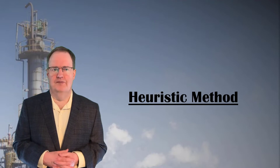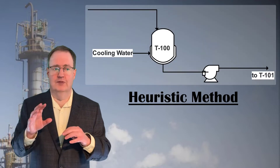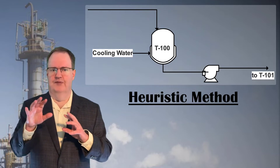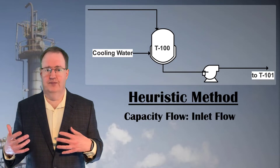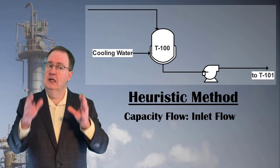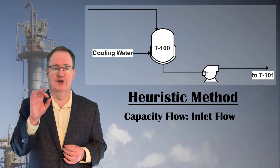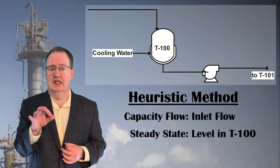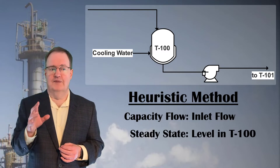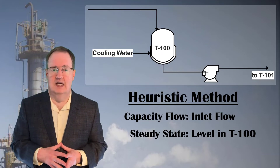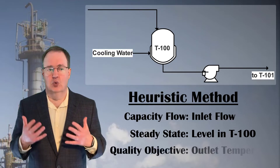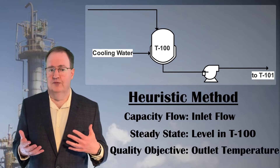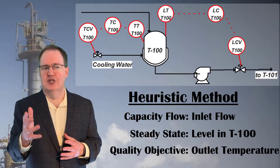There is a second method called the heuristic method for satisfying objectives with degrees of freedom. First, we determine the capacity flow — the flow that determines the throughput of the process. Clearly, the capacity flow here is the uncontrolled inlet from the column to T100. Next, we determine what mass inventories — levels for liquids, pressures for gases — need to be maintained for steady state. In this example, we need to maintain the liquid level in T100. With the inlet flow uncontrolled, only the outlet flow is available to maintain steady state. That allows us to satisfy any quality objectives with the remaining available flows. The quality objective here is the outlet temperature, and the only remaining controllable flow is the cooling water flow to the jacket. The solution is the same, as you would expect.